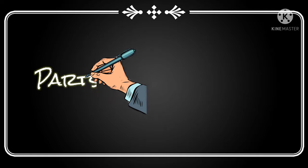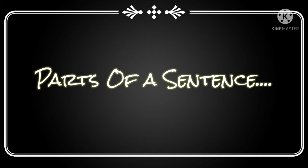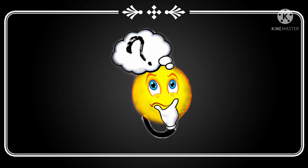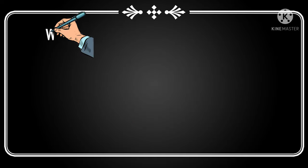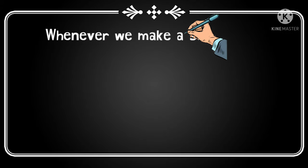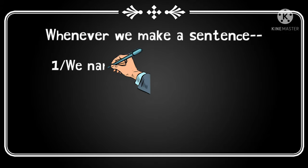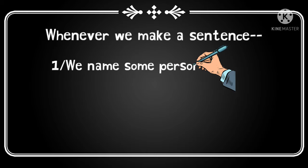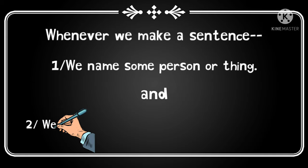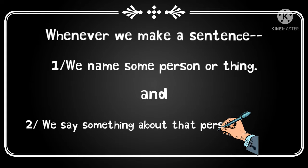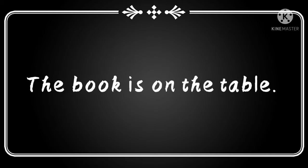Hello once again, my dear students. Today we're going to be discussing the parts of a sentence and many more other topics, so keep watching the video till the last. What are the parts of a sentence? They are the subject and the predicate. Whenever we make a sentence, first of all we name some person or thing and we say something about that person or thing.